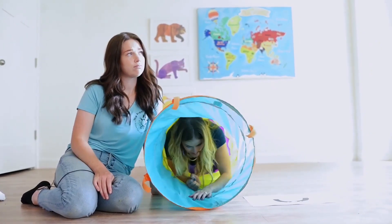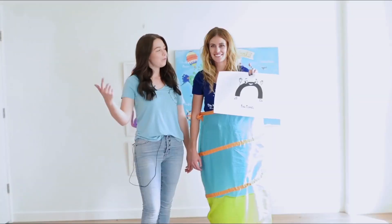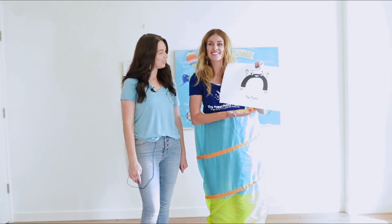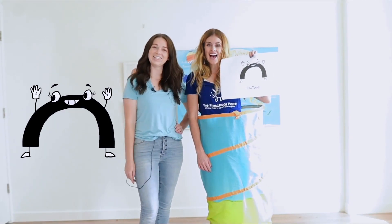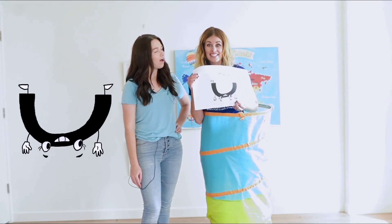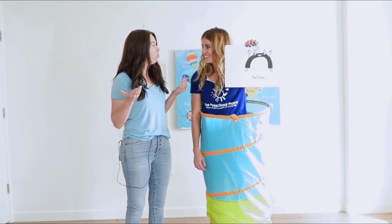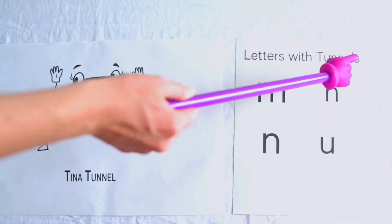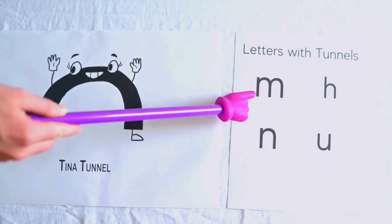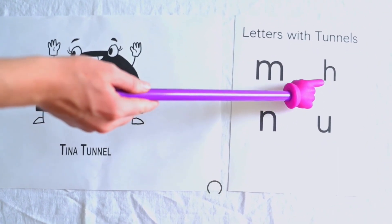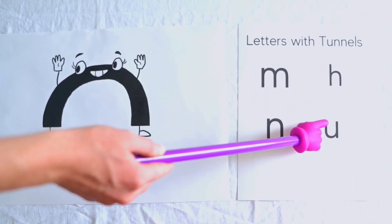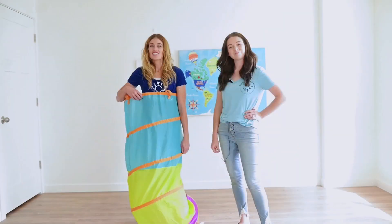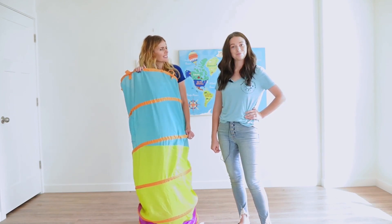I wish some of my friends could play — none of my friends can play today. We can play! Hi Tony, who's this? This is my friend Tina the Tunnel. Tina is a letter feature in the shape of a tunnel, just like this tunnel. Yes, Tina can go this way or this way. Can we see what she looks like in letters? Yes — there are four letters with Tina the Tunnel in them. I see two tunnels in the letter M. There's one tunnel in lowercase H. Now this tunnel is in the letter N. And look — the letter U is an upside-down tunnel.